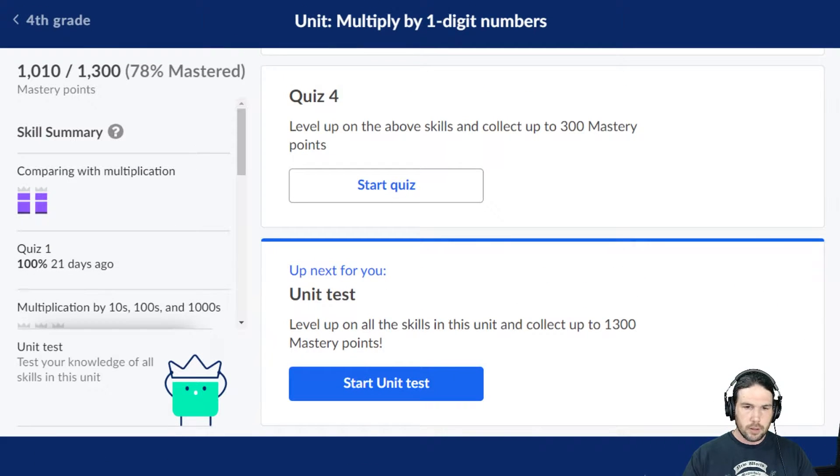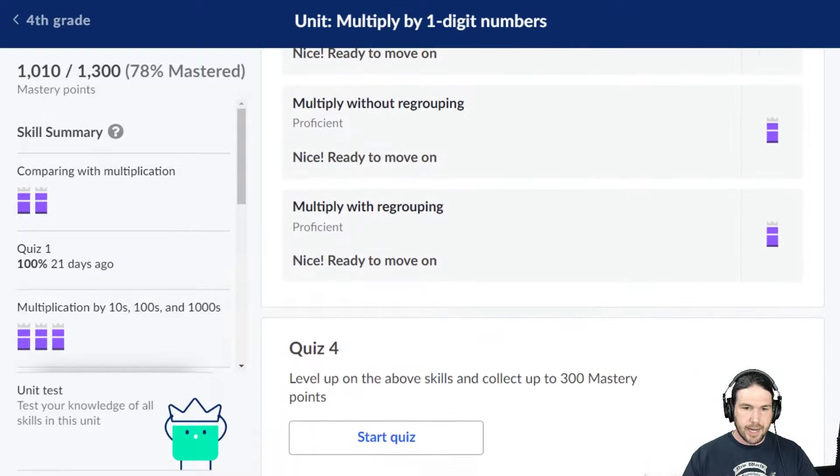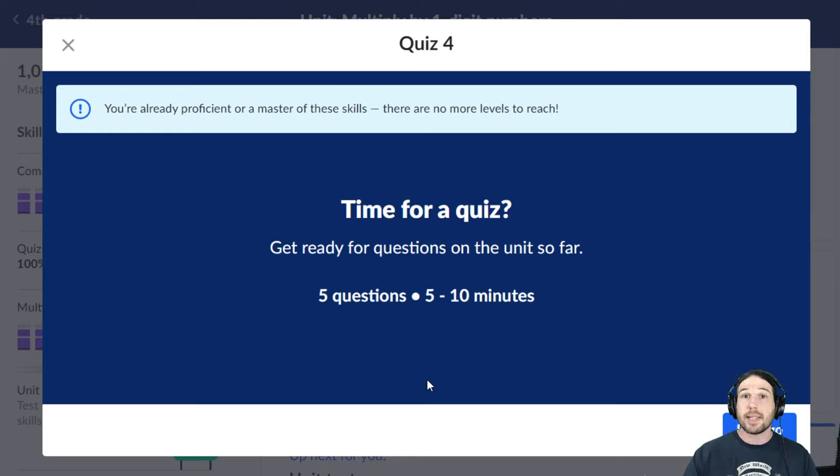Here we have quiz 4, which is going to be on multiplying with partial products and with and without regrouping. Let's go ahead and get it done.